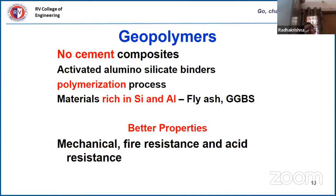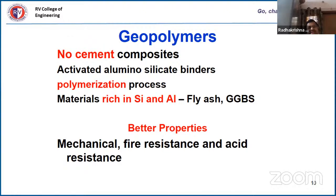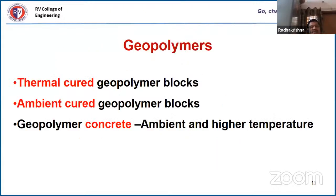What is geopolymer? It is a no-cement composite — we don't use cement at all. It is activated by alumino-silicate binders: any material rich in silicon and alumina can be called an alumino-silicate binder. It is formed by a polymerization process. Materials like fly ash and GGBS can be used, giving better mechanical properties — compressive strength, split tensile strength, bond, fatigue, shear — as well as fire and acid resistance.